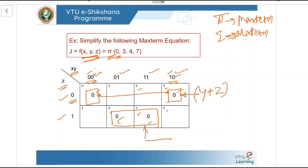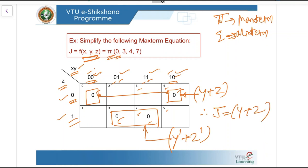For the second group, from 0 to 1 there is a change, whereas 1 to 1 there is no change. Therefore we get the variable as Y, and since it is 1 we get Y-bar, and this side is 1 so we get Z-bar. Therefore the final simplified expression is J equals (Y or Z) and (Y-bar or Z-bar). This is the simplification of the three-variable K-map.